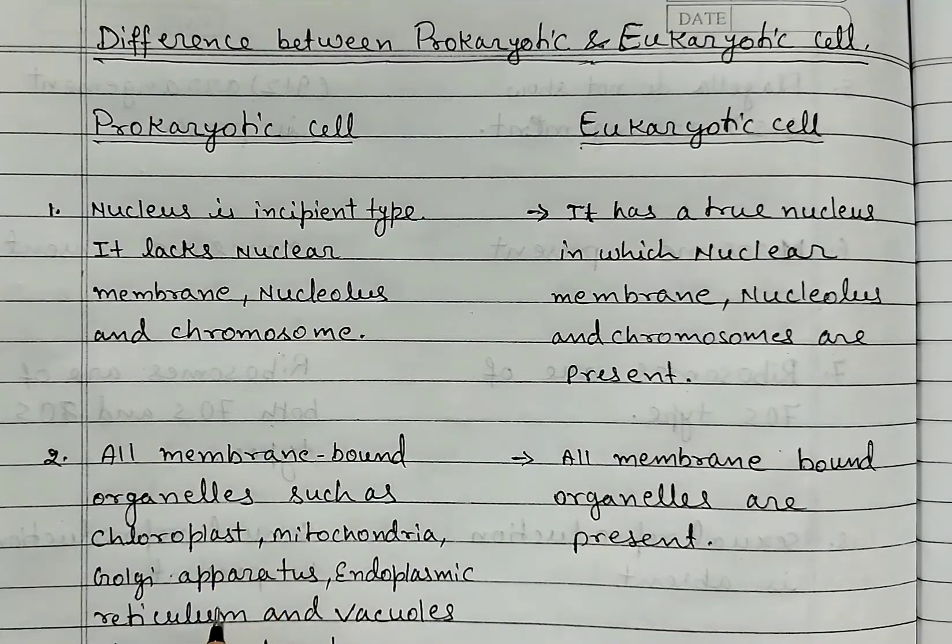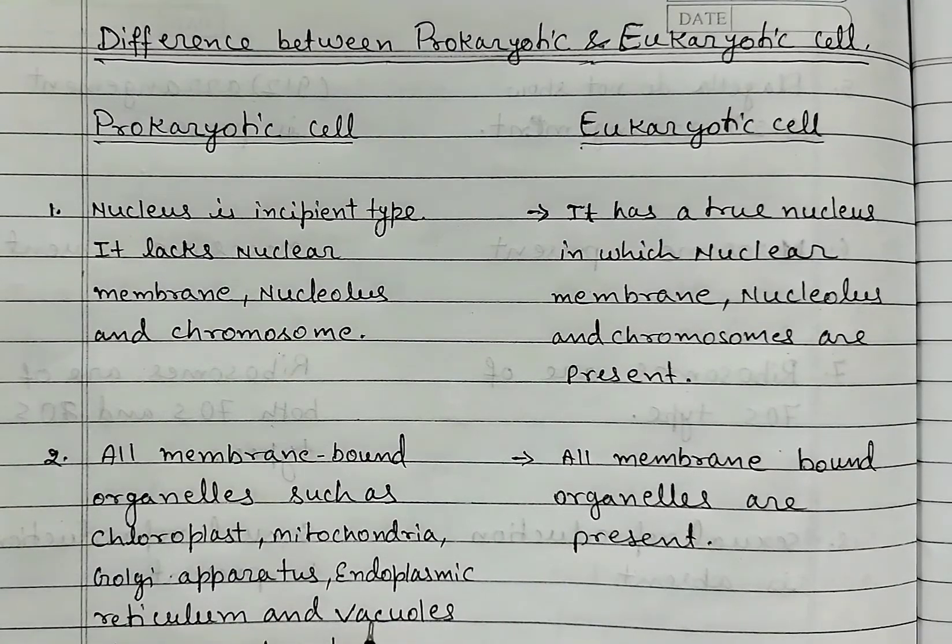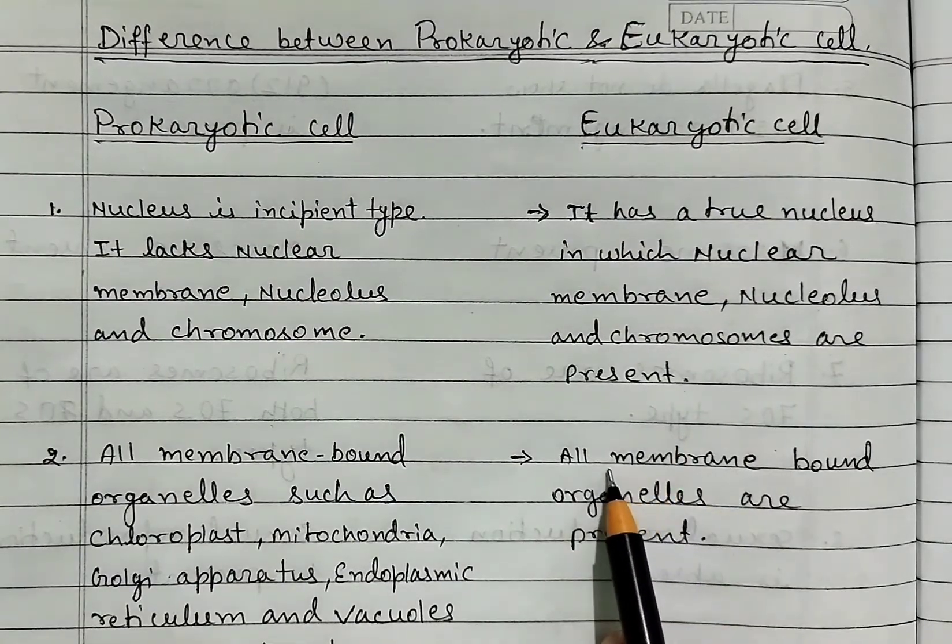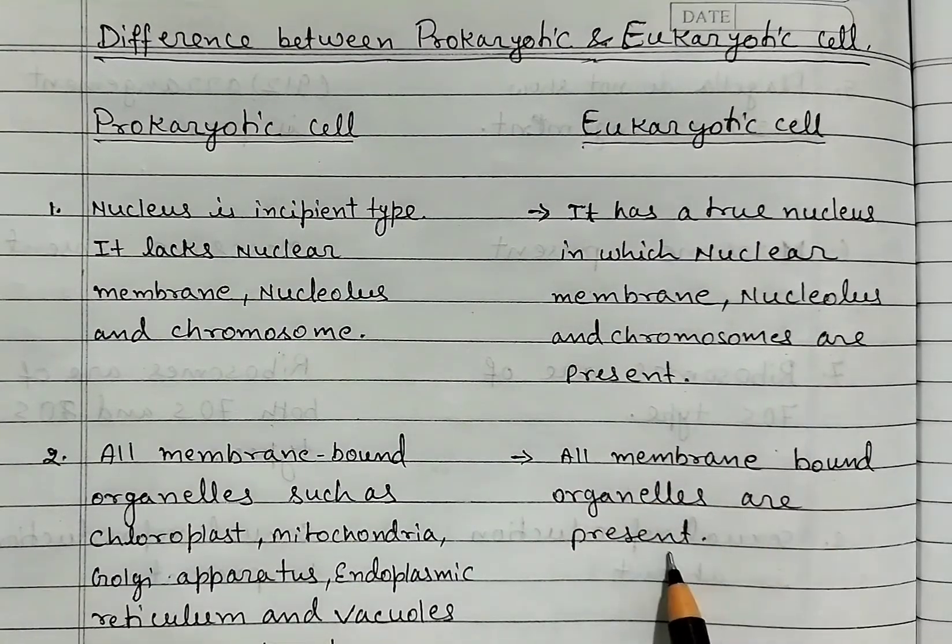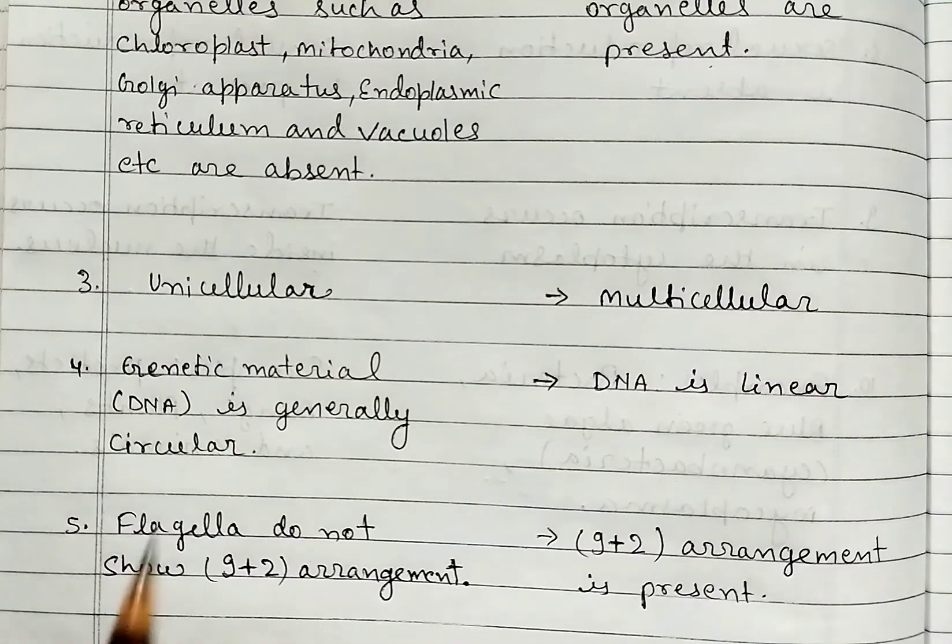All membrane-bound organelles are present in eukaryotic cell. Third, prokaryotic cells are unicellular and eukaryotic cells are multicellular.